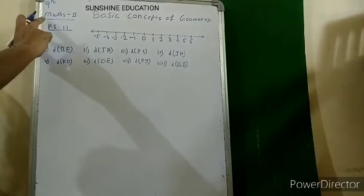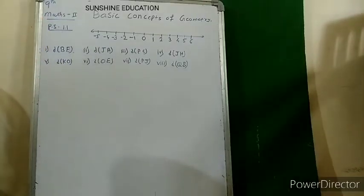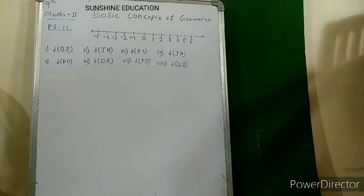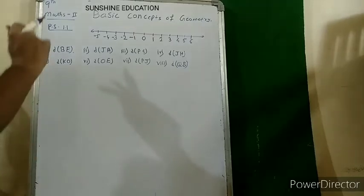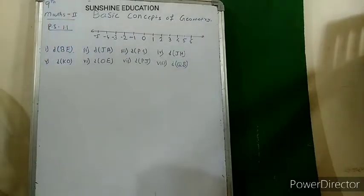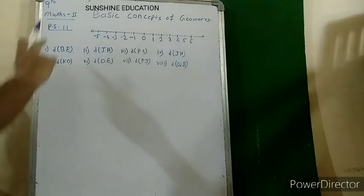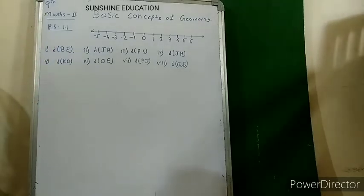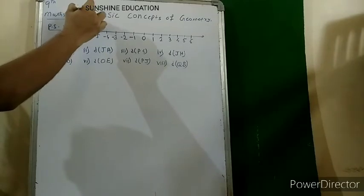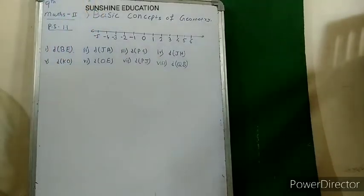This is the first chapter of Maths 2, called geometry. Up to 8th standard you study mathematics, but in 9th standard there are two parts: Maths 1, which is the algebra part, and Maths 2, which is geometry. We'll start with the very first chapter: Basic Concepts of Geometry.